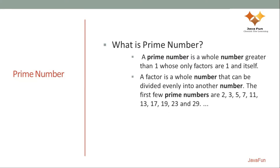A factor is a whole number that can be divided evenly into another number. The first few prime number examples are 2, 3, 5, 7. If I take the example of 7, it is only completely divisible by 1 and 7 itself. No other number from 2 to 6 can equally divide 7 — that's why 7 is a prime number. But if I take 4, it is equally divisible by 2 with remainder 0, so 4 is not a prime number.